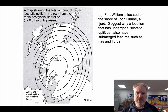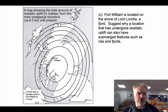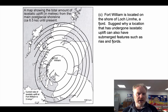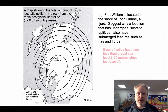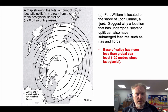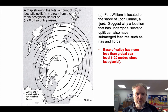Loch Linnhe — this long, straight sea loch that Fort William is near the top of — is a fjord. It's a glacial valley that's been flooded by the sea as sea levels have risen. Now, if sea levels have risen by 100 to 120 metres, the base of the valley hasn't uplifted by that much.